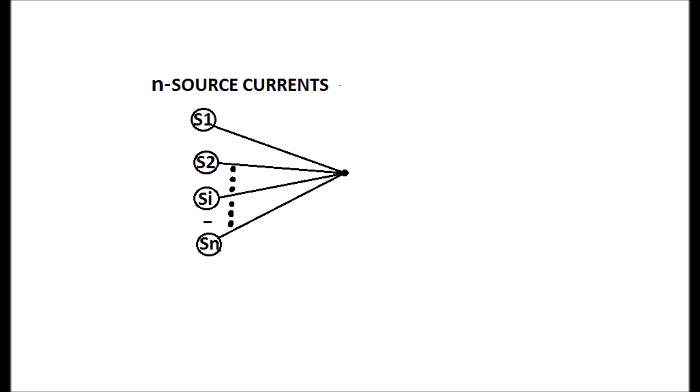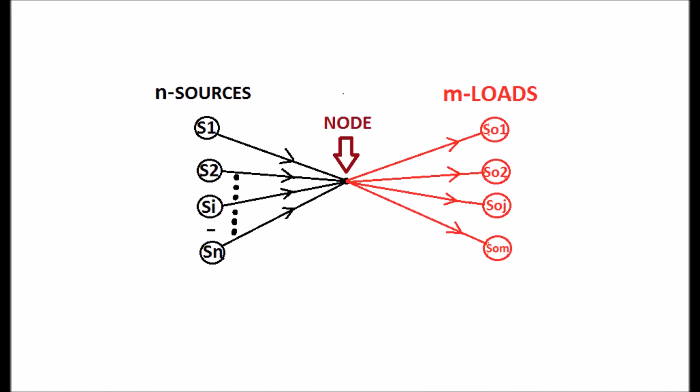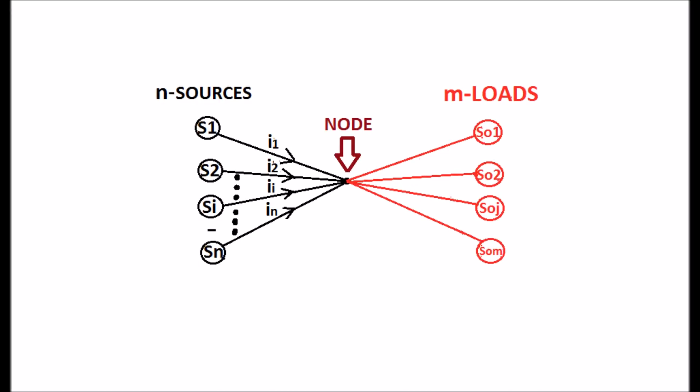There are N source currents feeding power to M loads through a node. The source currents are I1 to IN.